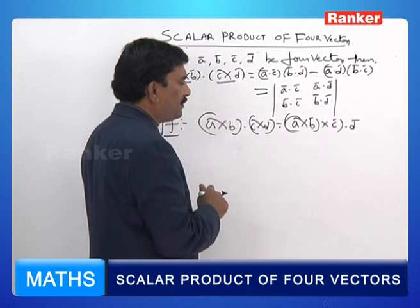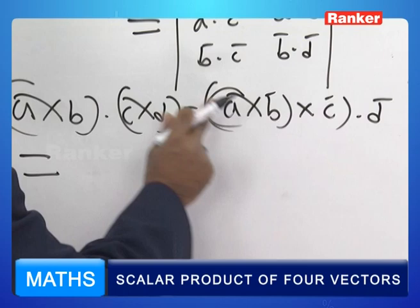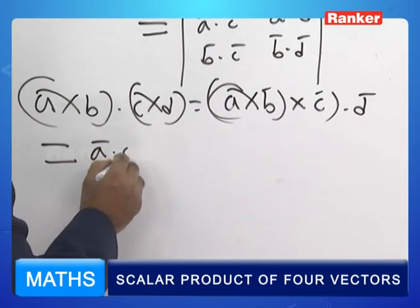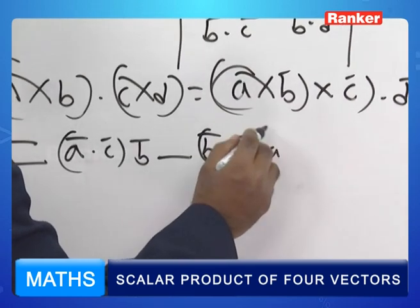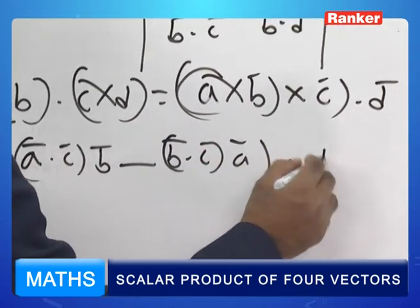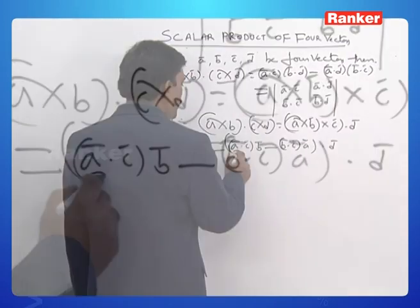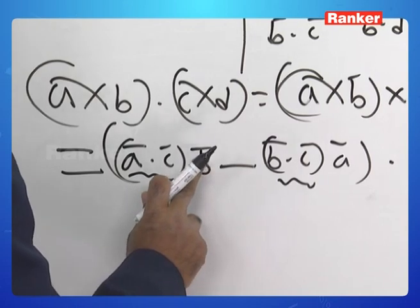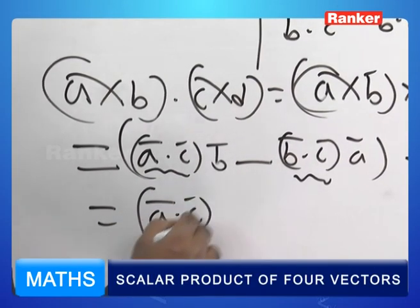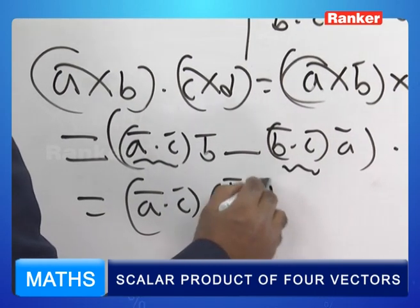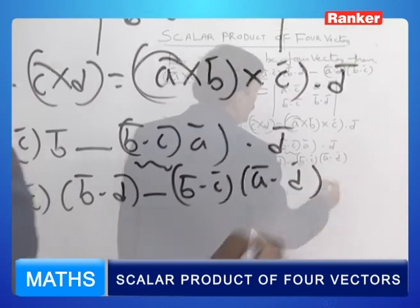Now take this cross — cross comes here. So therefore, apply the vector triple product: I can write A dot C into B bar minus B dot C into A bar. Now it becomes dot D bar. This is a scalar, this is also a scalar. Taking the dot product of B with this one, I can write: A bar dot C bar times B bar dot D bar, minus B bar dot C bar times A bar dot D bar.